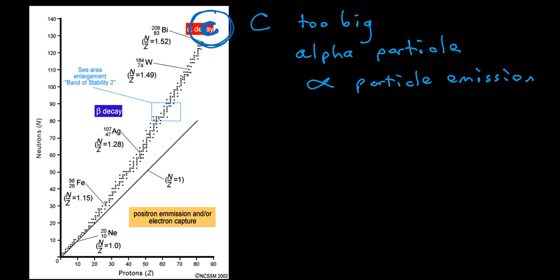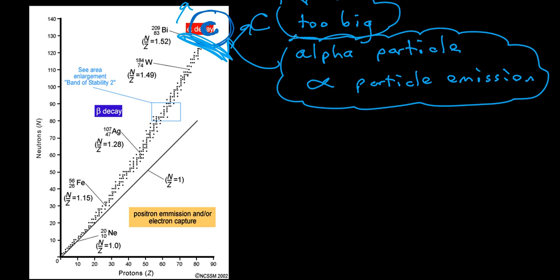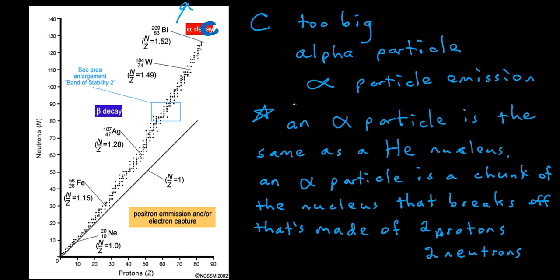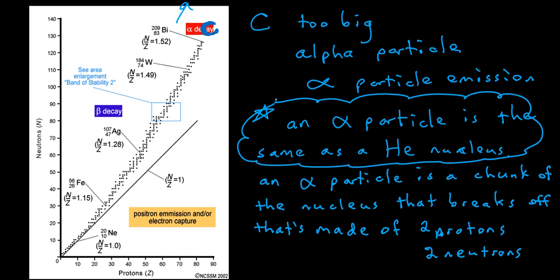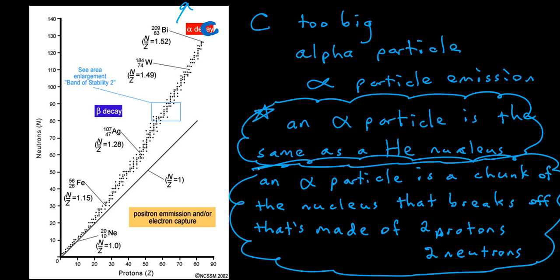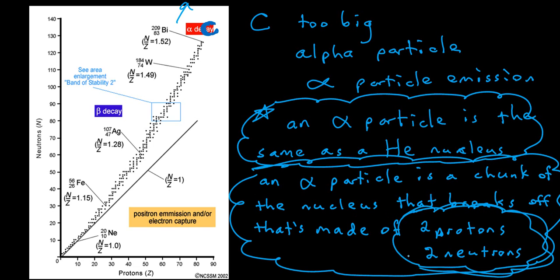The last area on the band of stability is up at the top, where the stability region comes to a dead end. If a nucleus plots above and beyond where that region ends, the issue is that the nucleus has become too big to remain stable — this is region C. If something is too big, the type of radiation given off is alpha particles, or alpha particle emission. An alpha particle is the same thing as a helium nucleus: a chunk of the nucleus that breaks off, made up of two protons and two neutrons.